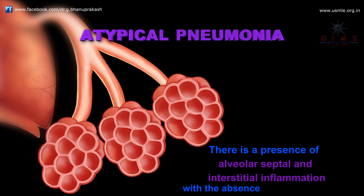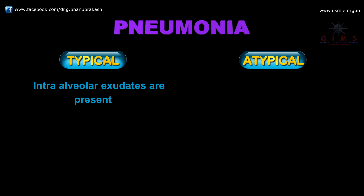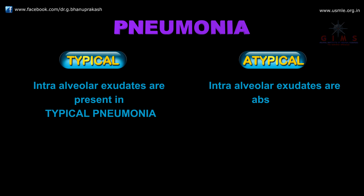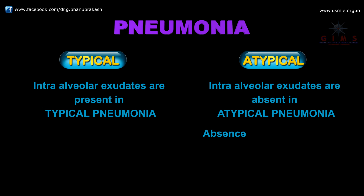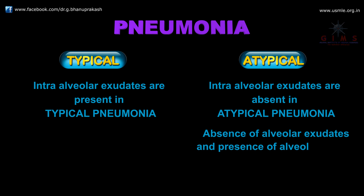Intra-alveolar exudates are seen in typical pneumonia, but these are absent in atypical pneumonia. In atypical pneumonia, there is an absence of alveolar exudates, but there is infiltration with alveolar, septal, and interstitial inflammation.